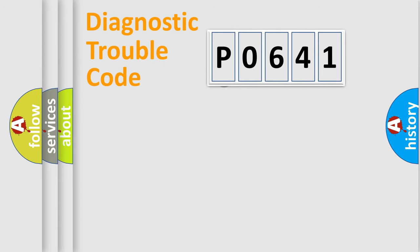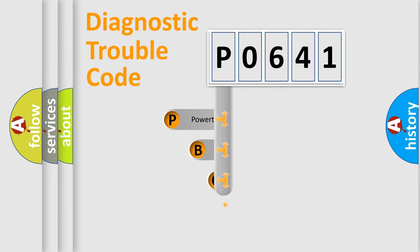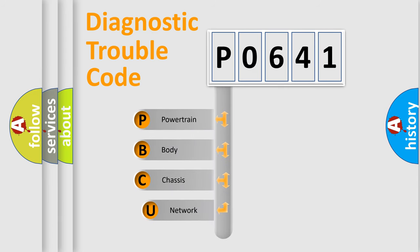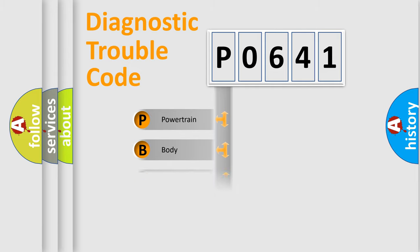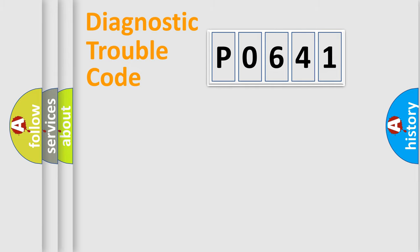First, let's look at the history of diagnostic fault code composition according to the OBD2 protocol, which is unified for all automakers since 2000. We divide the electric system of an automobile into four basic units: Powertrain, Body, Chassis, and Network.